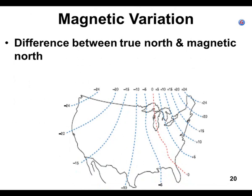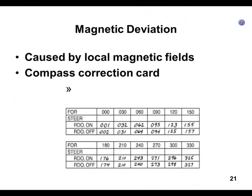We covered magnetic variation between true north and magnetic north. We covered magnetic deviation, which is caused by local magnetic fields. The compass card corrects for the local magnetic fields in the aircraft, but it doesn't take into account taxiing over a steel plate or flying low over an open pit iron mine.